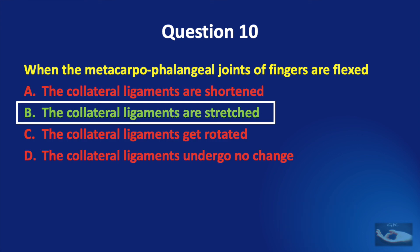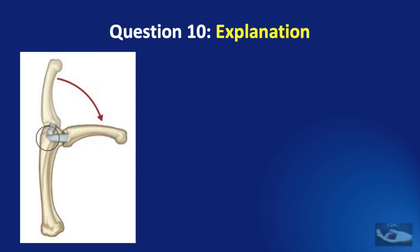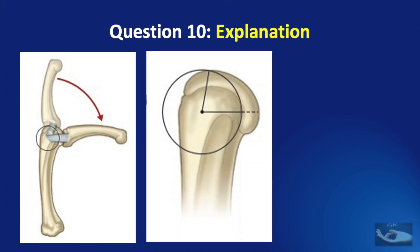The correct answer is B — the collateral ligaments are stretched. In the extended position of the metacarpophalangeal joint, the collateral ligaments are short and hence very lax. On flexion of the metacarpophalangeal joint, the collateral ligaments get stretched. This is due to the peculiar cam-shape of the head of the metacarpal, which is more in the antero-posterior diameter and less in the proximo-distal diameter.